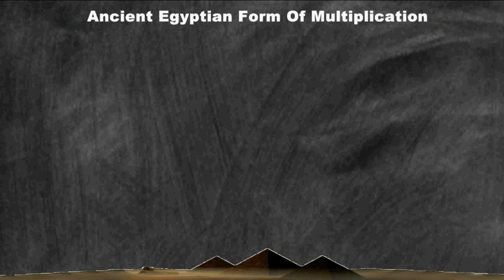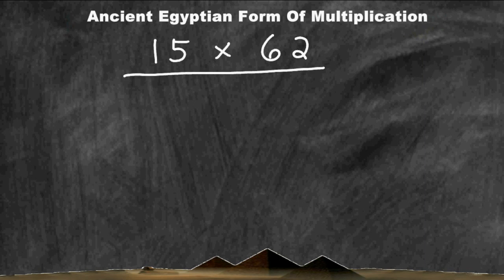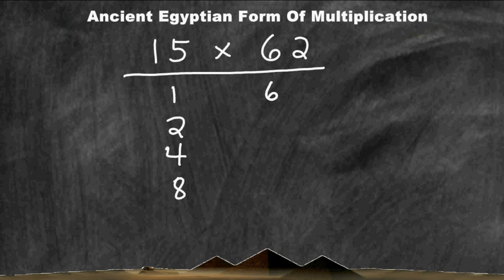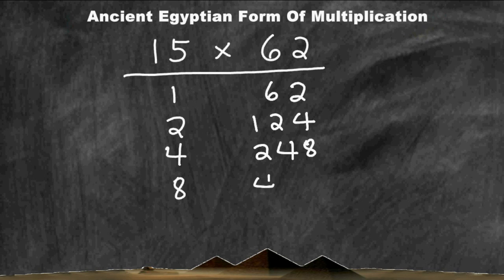Let's try another example. In this example, we are going to multiply 15 times 62. As always, start by writing the number 1 in the first column and start doubling — but remember, we are not allowed to exceed the number 15. So 1, 2, 4, and 8 are the only numbers we may write underneath 15, because doubling 8 would exceed 15. In the second column, we rewrite 62. 62 doubled is 124, 124 doubled is 248, and 248 doubled is 496.